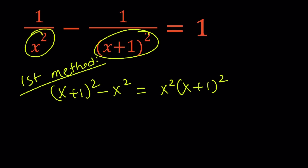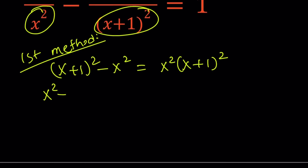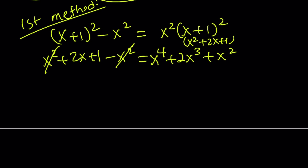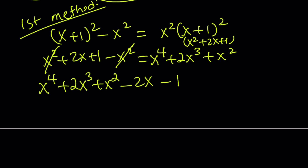Let's go ahead and expand everything. We get x squared plus 2x plus 1 minus x squared. And here we're going to get x squared multiplied by x plus 1 squared, which is x squared plus 2x plus 1. So let's distribute x squared over it: we get x to the fourth power plus 2x to the third power plus x squared. The x squared cancels out on the left-hand side, and we put everything on the right-hand side so that x to the fourth becomes positive. Altogether: x to the fourth plus 2x cubed plus x squared minus 2x minus 1 equals 0.